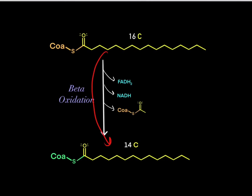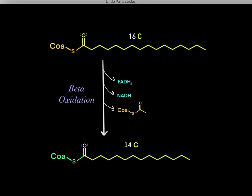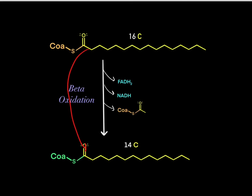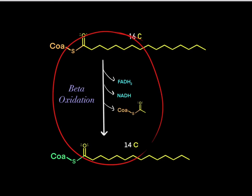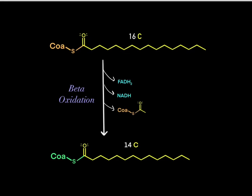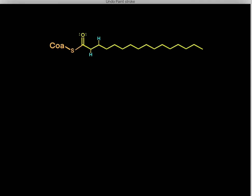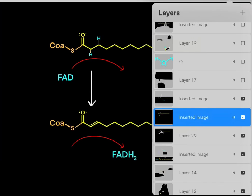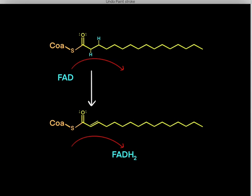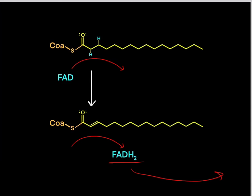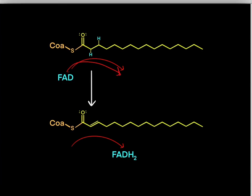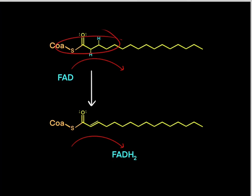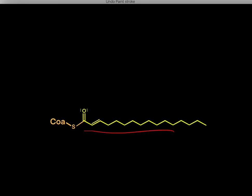Every round of beta-oxidation creates reduced cofactors, one acetyl-CoA molecule, and leaves a new acyl-CoA that is two carbons shorter. The first step focuses on the two alpha hydrogens: the oxidized FAD cofactor reacts with the acyl-CoA, stealing these hydrogens and electrons to produce reduced FADH2. So FAD gets reduced to FADH2, and the acyl-CoA gets oxidized to form a double bond, leaving us with an unsaturated acyl-CoA.